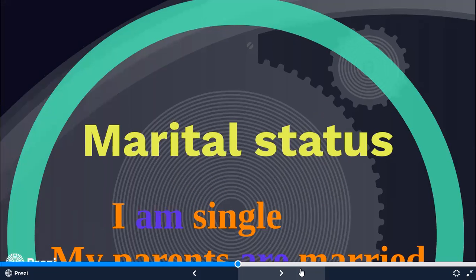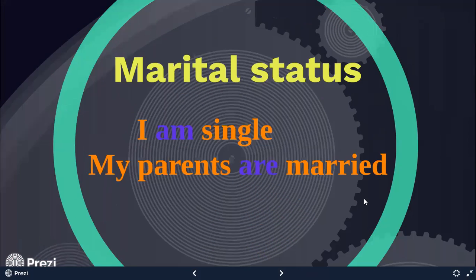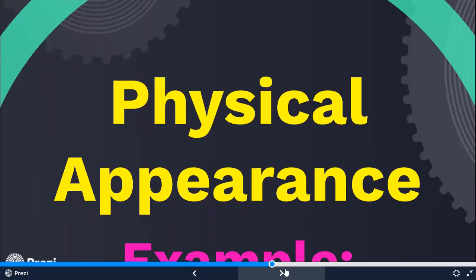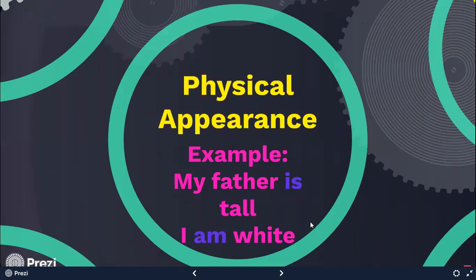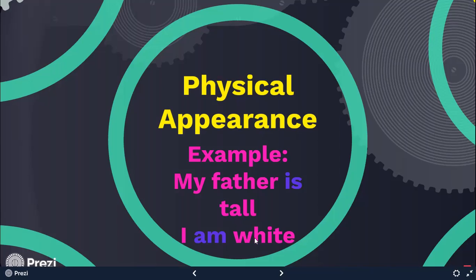Also, we use the verb be to talk about our marital status. 'I am single and my parents are married.' Then we also use verb be to describe some aspects about our physical appearance. Look at this: 'My father is tall. I am white.' Mi papá es alto. Yo soy blanca. Tenemos el verbo ser o estar y después un adjetivo que describe aspectos de nuestra apariencia física. Todos los adjetivos los podemos utilizar con el verbo ser o estar.